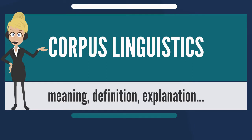The first computerized corpus of transcribed spoken language was constructed in 1971 by the Montreal French Project, containing one million words, which inspired Shana Poplack's much larger corpus of spoken French in the Ottawa-Hull area.